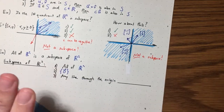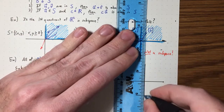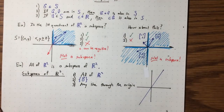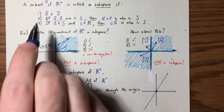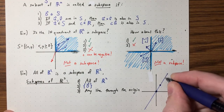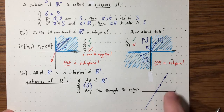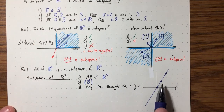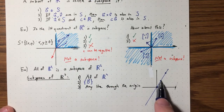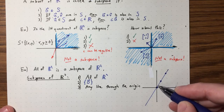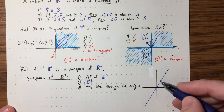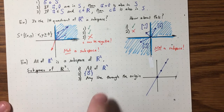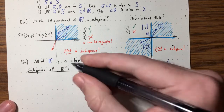Why is a line through the origin a subspace? Zero is in it. If I take any two vectors along the line and add them, I stay on the line. And if I scale a vector along the line by any scalar, I stay on the line. So any line through the origin is a subspace, and it turns out these — all of R², just the zero vector, and any line through the origin — are all the subspaces of R².